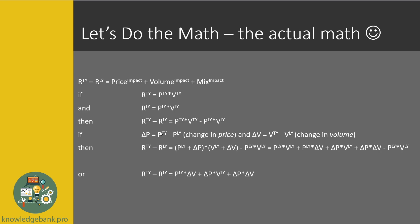I'm going to run through this pretty quickly. In this line, we're just restating that difference in revenue is comprised of price, volume, and mix components. If we define revenue as price times volume — so if my widget is $1 and I sell 100 of them, my revenue is $100 — then revenue this year (Rty) is equal to price this year times volume this year. Then I do the same for revenue last year.